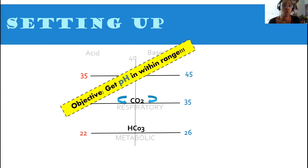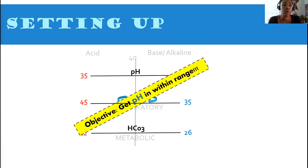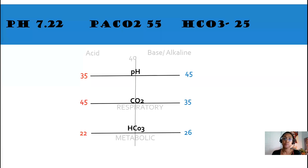Remember to always turn your CO2 around to reflect your acid and base ranges. And our objective is to get that pH within normal range. We have our setup. Pretty simple.